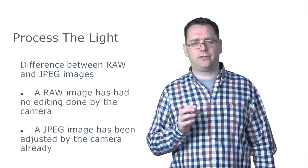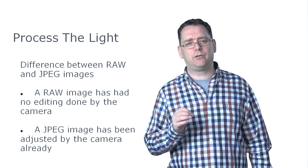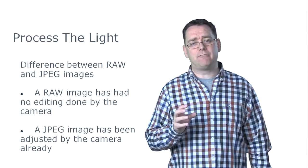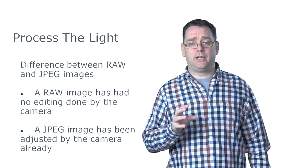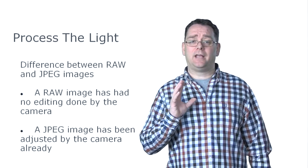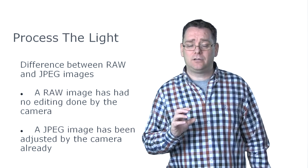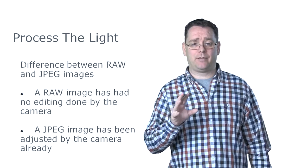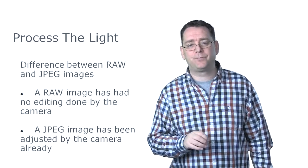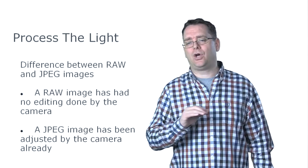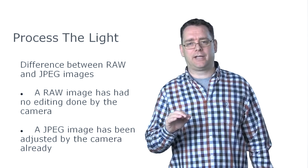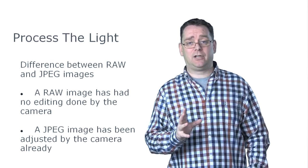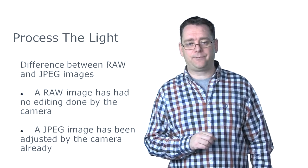Before we do that, let's understand the difference between a RAW and a JPEG image. A RAW image is a file the camera has captured with no editing done by the camera. It's saying: I'm going to leave this alone and let you decide how to edit it.